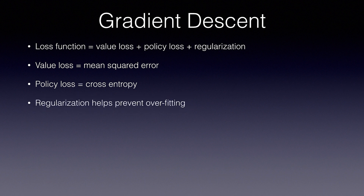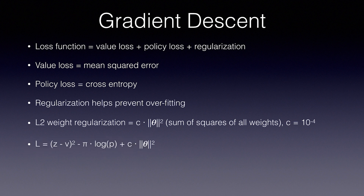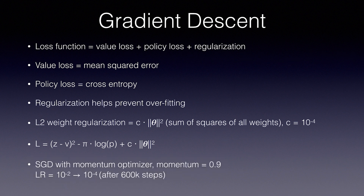Regularization helps prevent overfitting by adding a penalty as the weights get bigger. The equation for L2 weight regularization loss is C times the norm of theta squared — in other words, the sum of the squares of all the weights in the network. C is a parameter for controlling the strength of the weight penalty, set to 10 to the negative 4 per the AlphaZero paper. In the final loss function, Z is the value calculated by Monte Carlo tree search, V is the value predicted by the network, Pi is the policy predicted by the network, and P are the actual probabilities from Monte Carlo tree search. The momentum optimizer was used with momentum set to 0.9. The learning rate started at 10 to the negative 2 and was annealed to 10 to the negative 4 after 600,000 iterations.